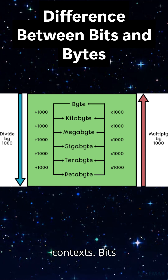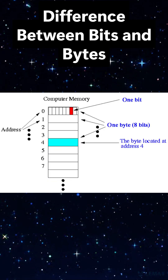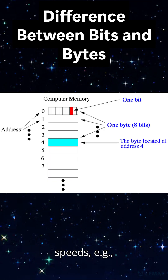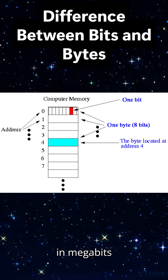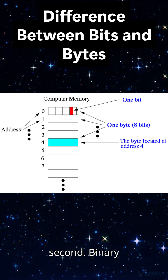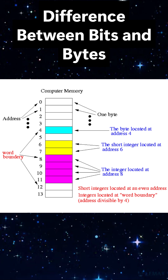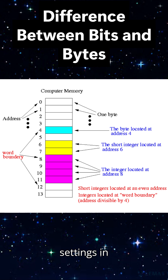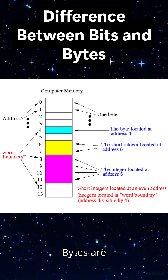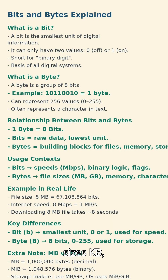Usage contexts: bits are often used to measure data transfer speeds — for example, internet speed in megabits per second — binary operations inside CPUs, and individual flags or settings in programming. Bytes are often used to measure file sizes: kilobyte, megabyte, gigabyte, terabyte.